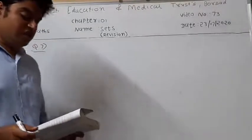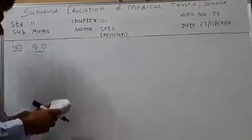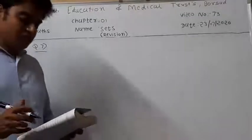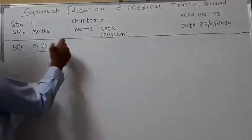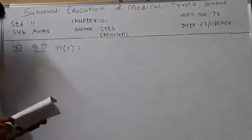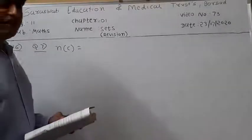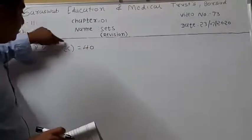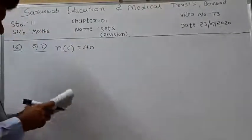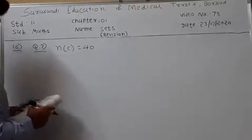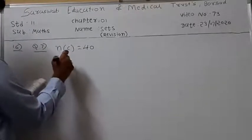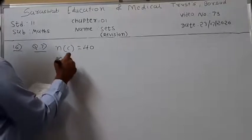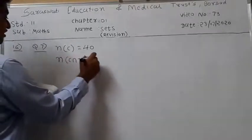In a group of 65 people, 40 like cricket. We denote C for people who like cricket, so N of C is equal to 40. Ten people like both cricket and tennis, so N of C intersection T is equal to 10.